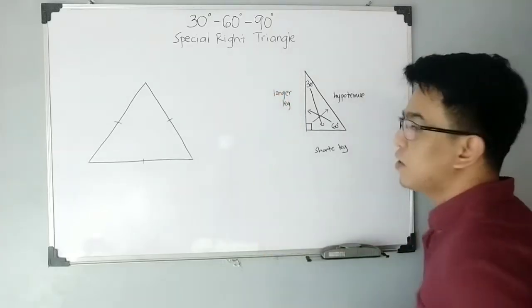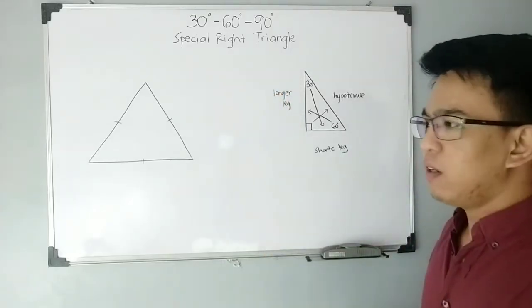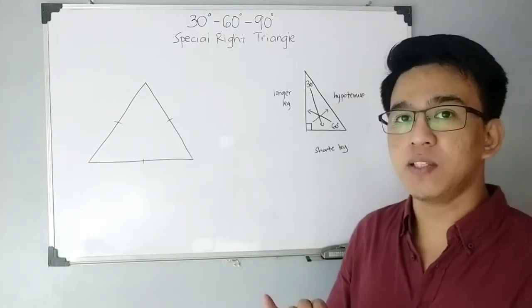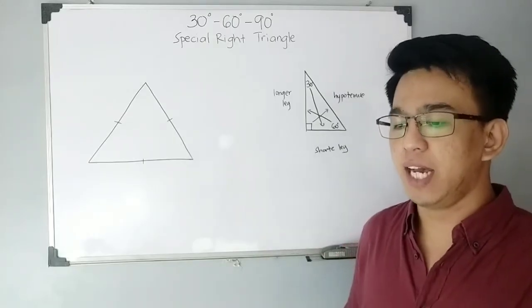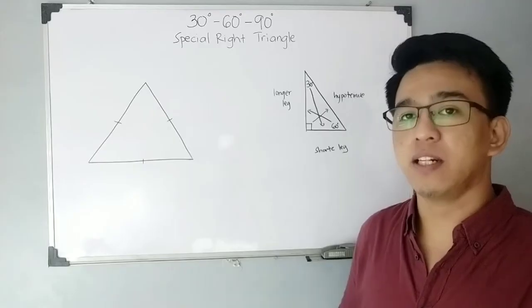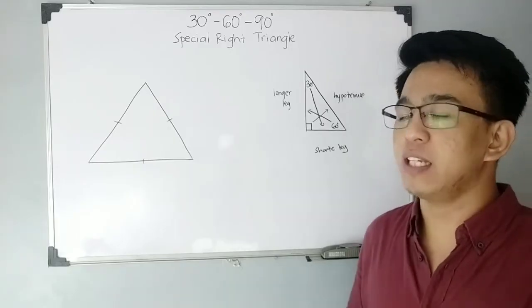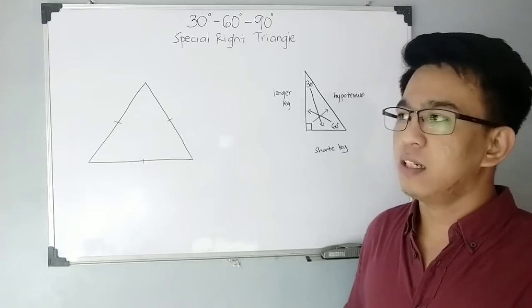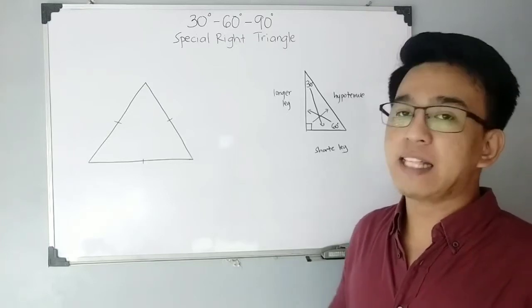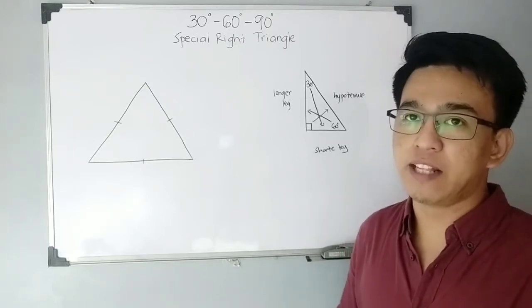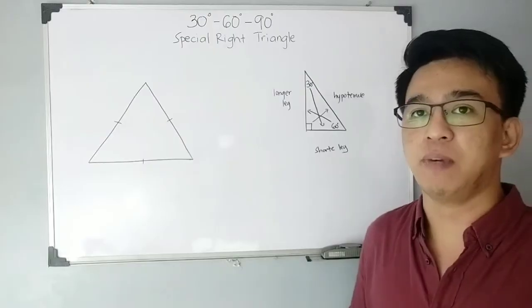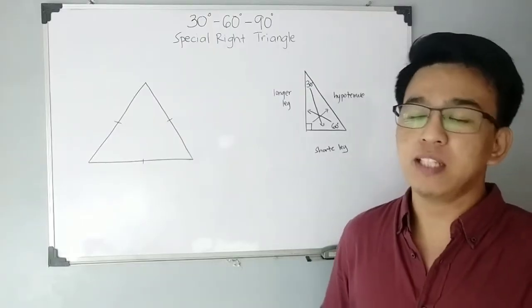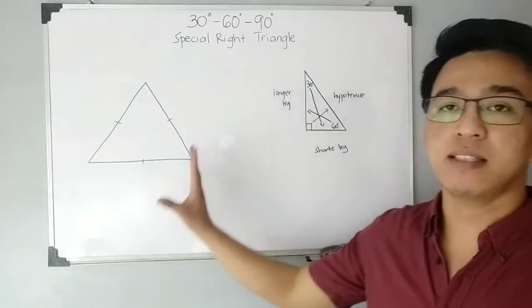The 60-degree angle's opposite side is your longer leg. The reason why we label those sides as hypotenuse, shorter leg, and longer leg is because it is important for us to acknowledge the sides of the right triangle. You will realize the importance of this later on, so let's move on with the derivation.